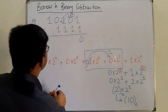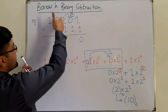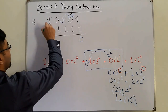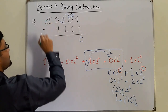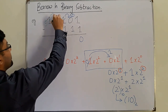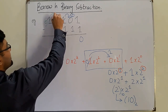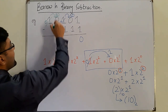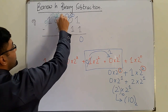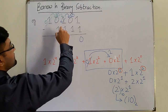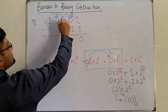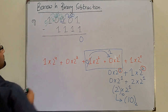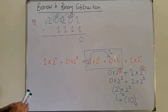Now 0 minus 1 is again not possible, so I have to borrow from this position. This is left to be 0 and I borrow to here. Now this is a 10 — we got 2 here. But I have to borrow again further, so this becomes a 2, this becomes 10, and this is left to be 1.